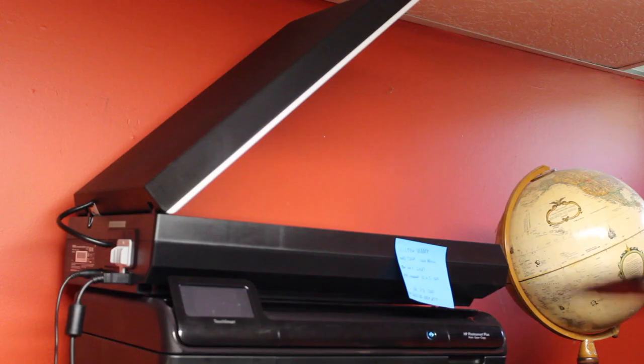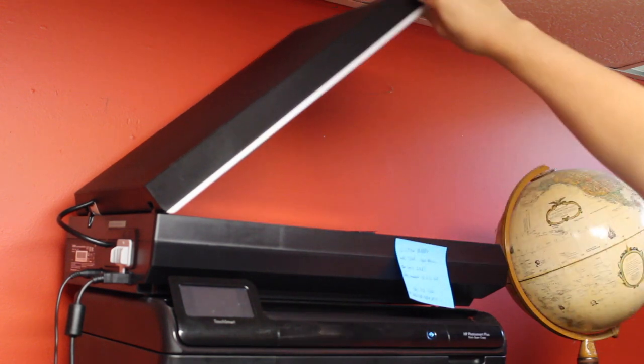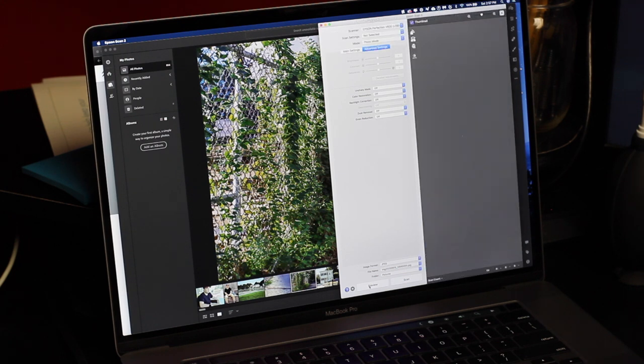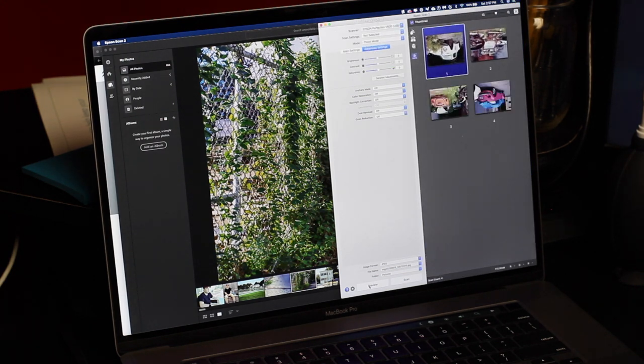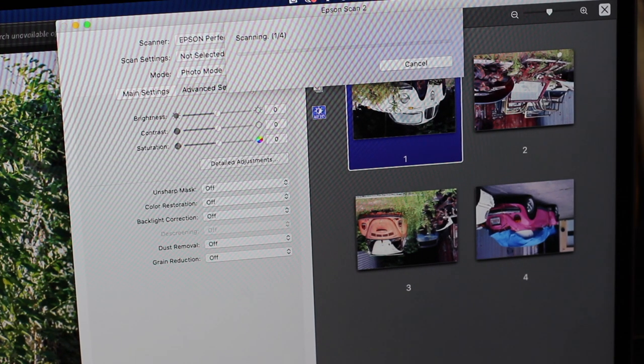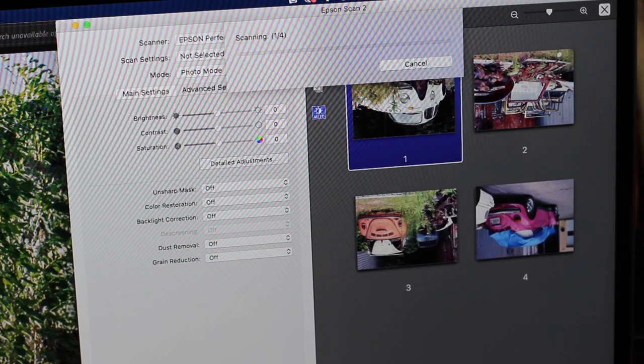Once that is done, put that in the scanner. I usually like to go into Epson Scan 2, do a preview so I can verify it's got the correct frames, and then hit scan. Typically I do it at 6400 DPI, the maximum optical resolution of my scanner. I recommend that so you don't get any digital noise.